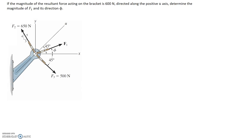We're asked that if the magnitude of the resultant force acting on the bracket is 600 newtons and it's directed along the positive u-axis, determine the magnitude of F1 and its direction phi. We'll use sum of forces in the x and y direction equations to work out the resultants. Starting with the resultant FR, it needs to be directed along this axis in the positive direction at a 45 degree angle, and we know it has to be 600 newtons.